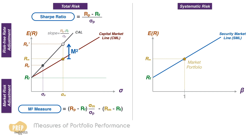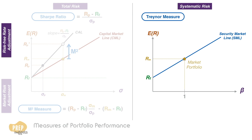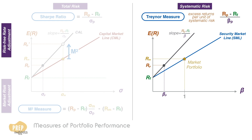The Treynor Measure is the equivalent of the Sharpe Ratio but based on systematic risk or beta. Returns are measured as per unit of systematic risk — we simply replace the portfolio standard deviation with portfolio beta. Likewise, the Treynor Measure is the slope of this line.